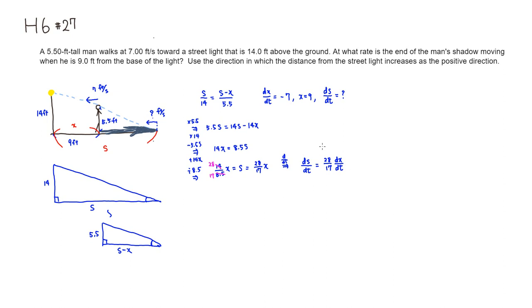Then we know that dX/dt is negative 7, so we can plug that in here. So we're going to have 28 over 17 times negative 7.